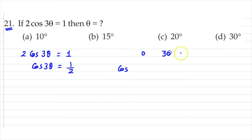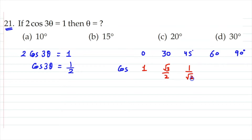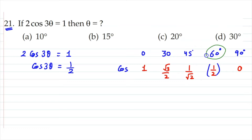Recalling the cosine table: cos 0° is 1, cos 30° is √3/2, cos 45° is 1/√2, cos 60° is 1/2, and cos 90° is 0. The value 1/2 matches cos 60°. So cos 3θ equals cos 60°.